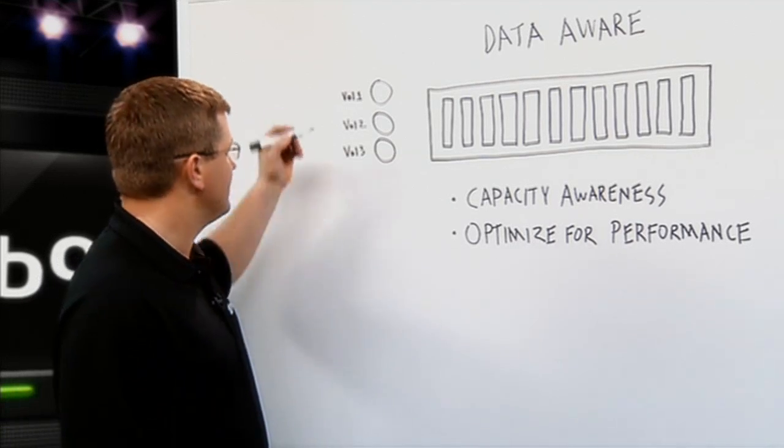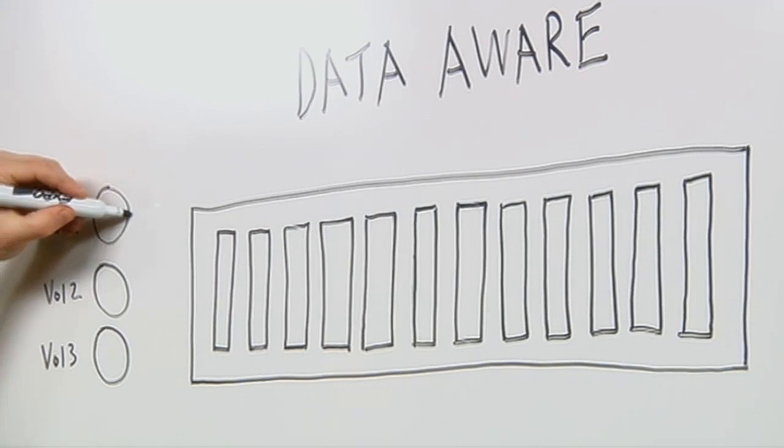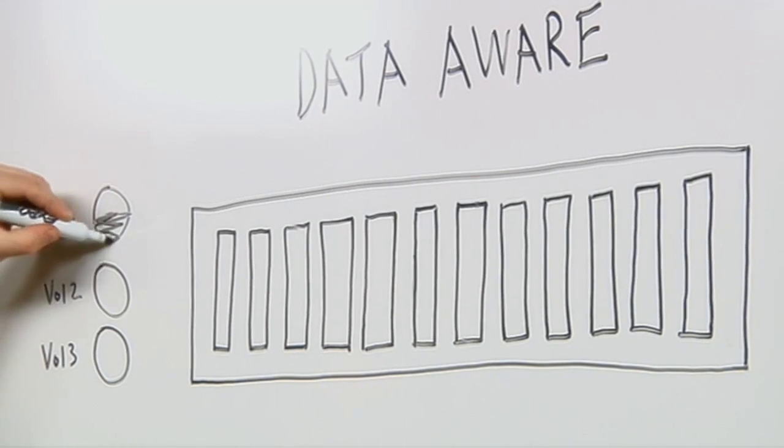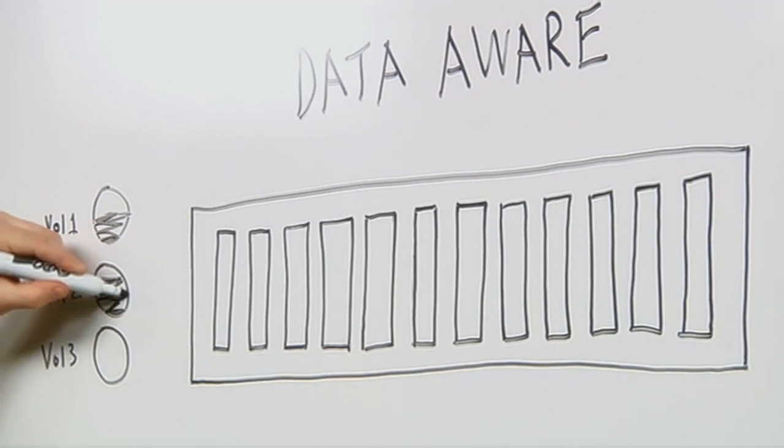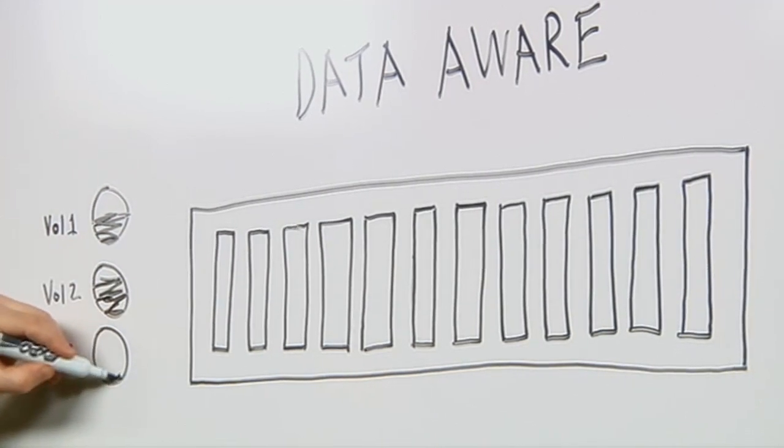So as an example, volume one may be half utilized, and volume two may be almost fully utilized, and volume three may only be partially utilized.